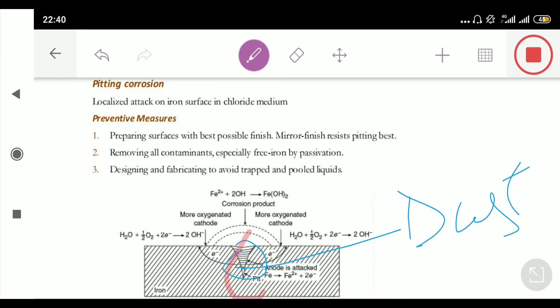So, with time, the size of this pit will be increasing, increasing, increasing. And finally, what will happen? This will lead to the break. And finally, this will be cut into two pieces. So, that is what pitting corrosion.